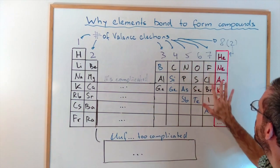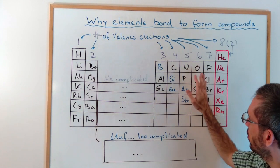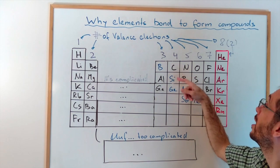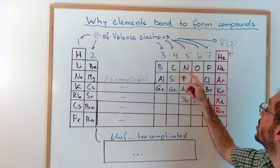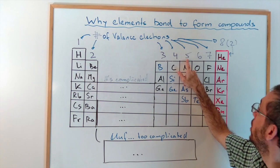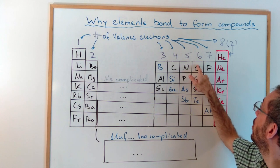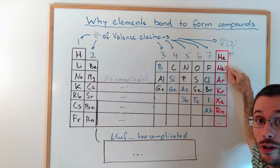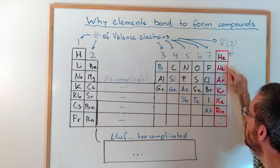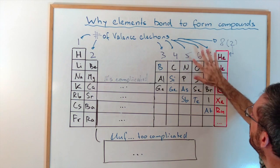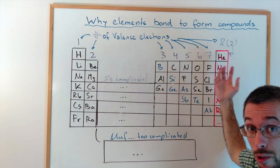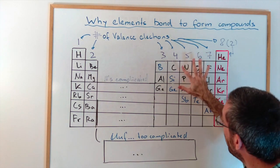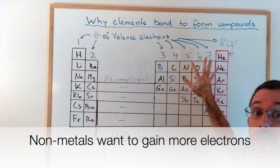For example, all those that are close to the right side, the easiest way for them to gain noble gas configuration is to get more valence electrons. So if you're nitrogen, you already have 5, you want to have 1, 2, 3 more to have the same electron configuration as neon. So those elements that are in this corner here, more to the right, that can get noble gas electron configuration by gaining more electrons, are called the non-metals.